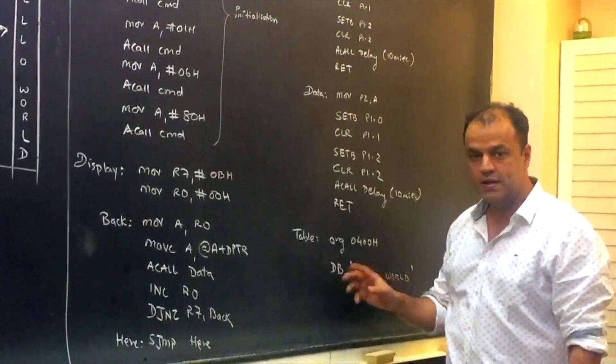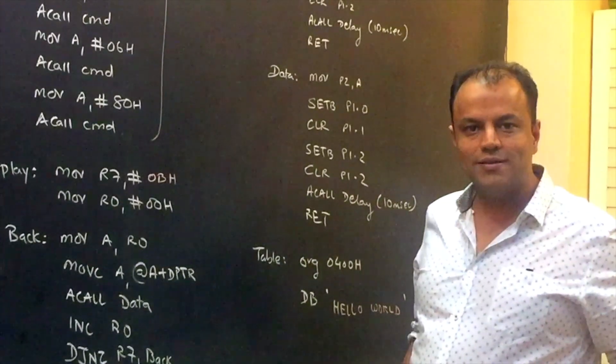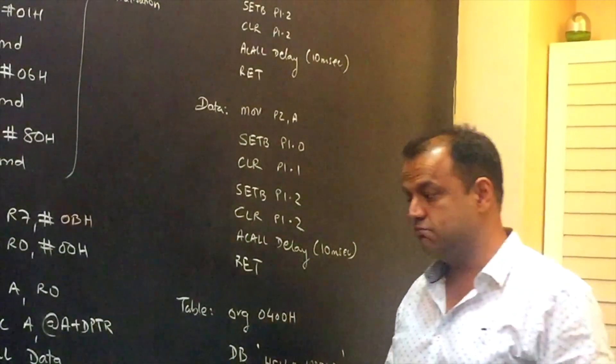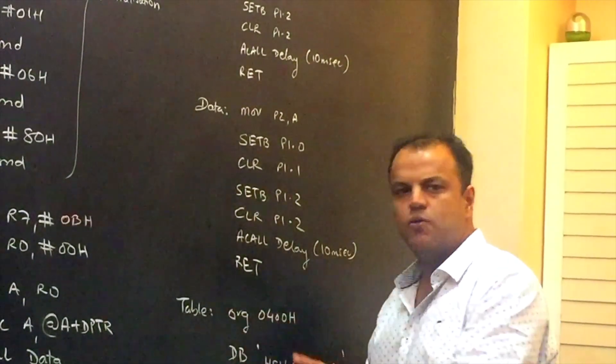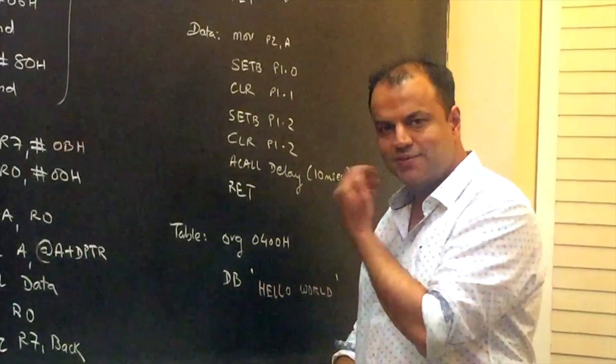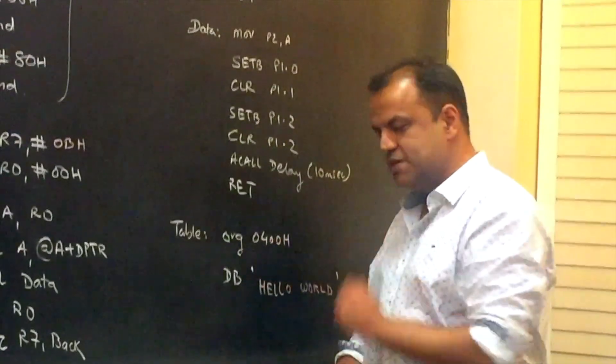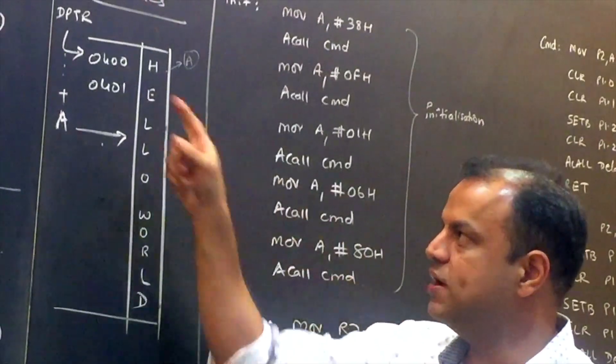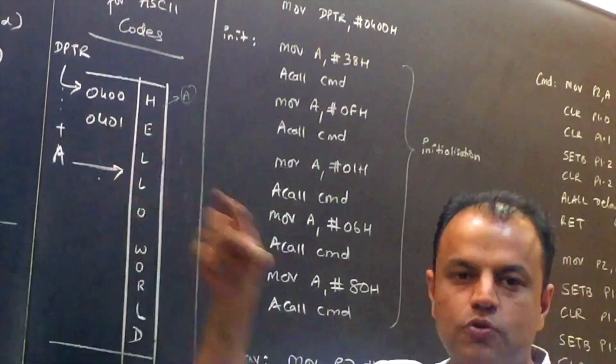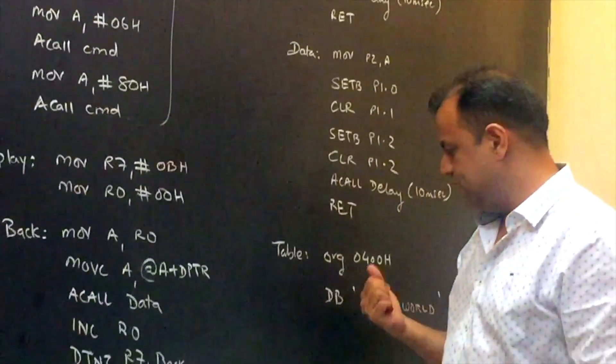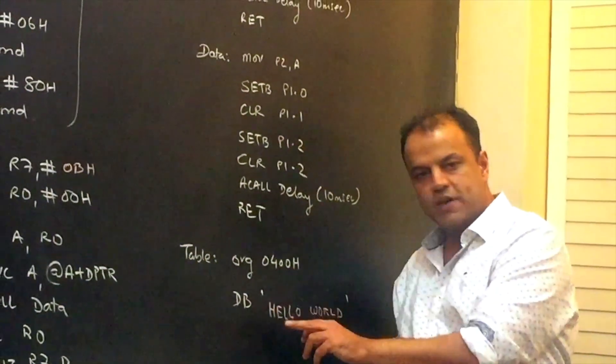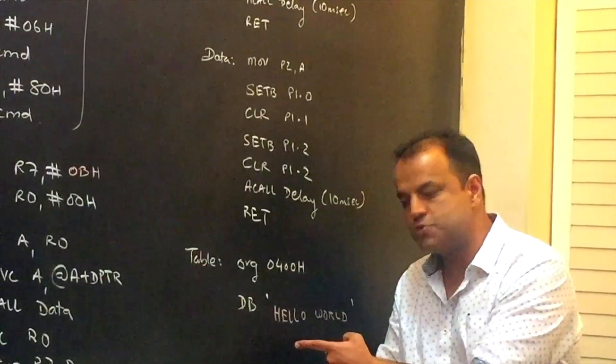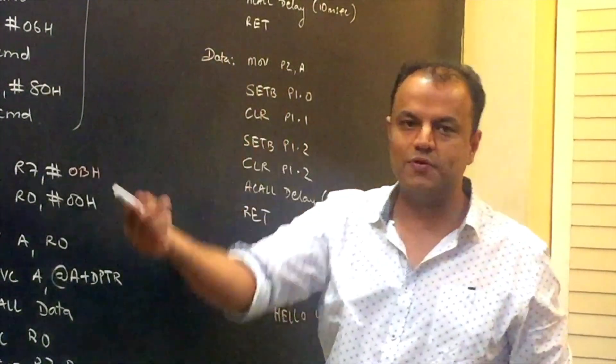These are your command routine and data routine. Now your lookup table. Either you can assume that there is a lookup table. If your examiner is very strict, make a lookup table. It's so small, two lines it takes. ORG 0400. ORG means origin. Whatever is the address you want to keep for the lookup table, keep that address. DB, defined byte, with a quotation, write hello world. The moment you put anything in quotation, assembler substitutes its ASCII value. So assembler will substitute the ASCII value of all these alphabets. And that's how you created a lookup table.